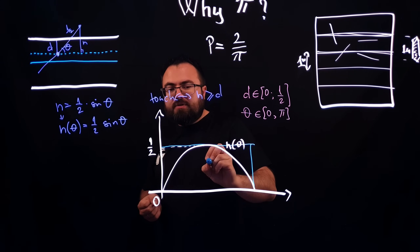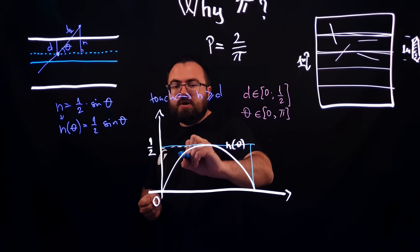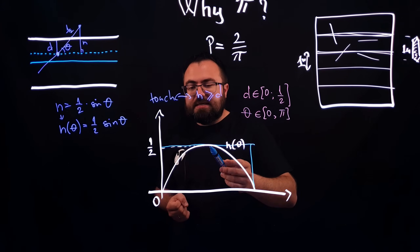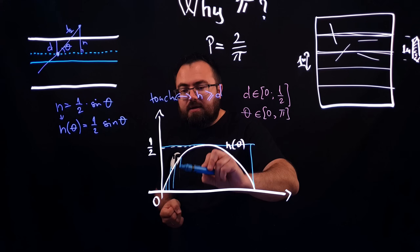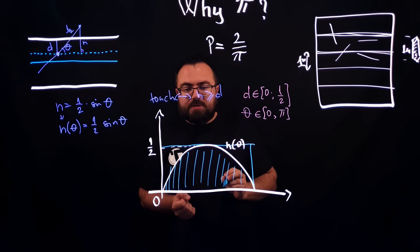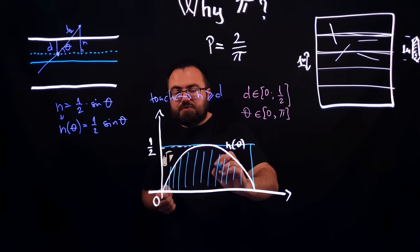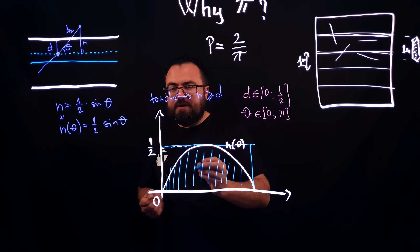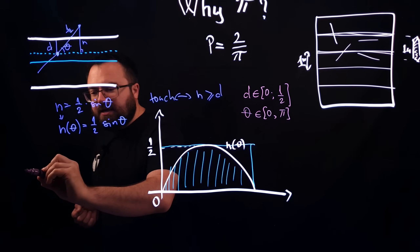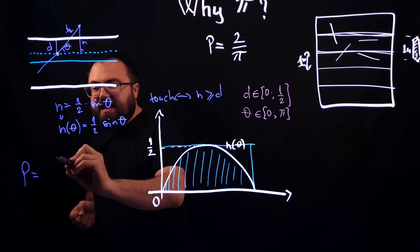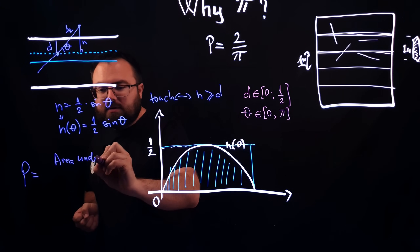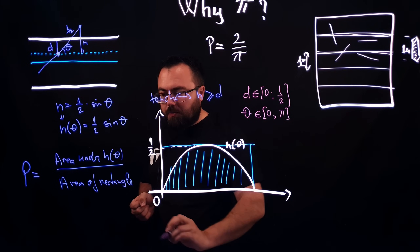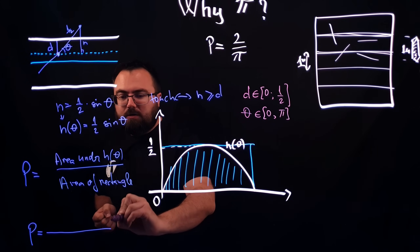Because D is between 0 and 1 over 2, we draw a rectangle over that region. The probability that H is greater than D equals the probability that the point D lies under the curve H of theta. This becomes a question of probability in terms of areas. The probability of a touch is the area under H of theta divided by the area of the rectangle.